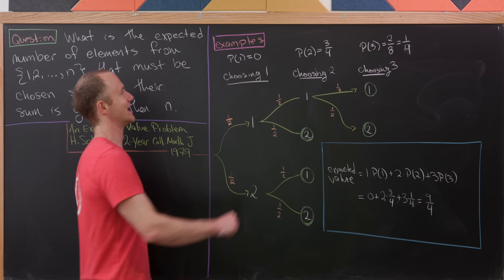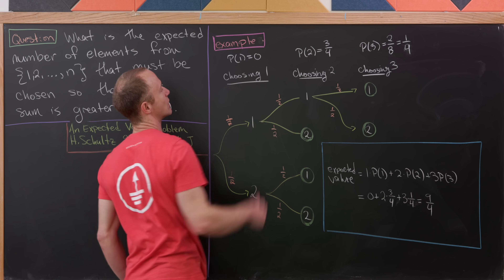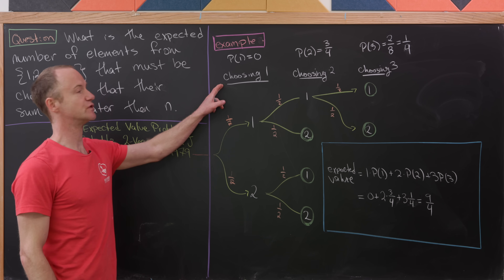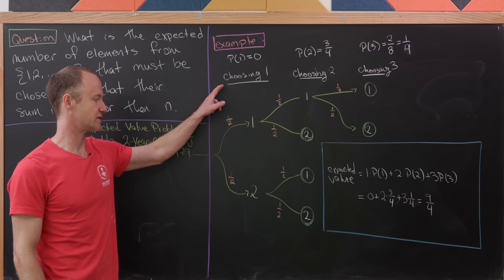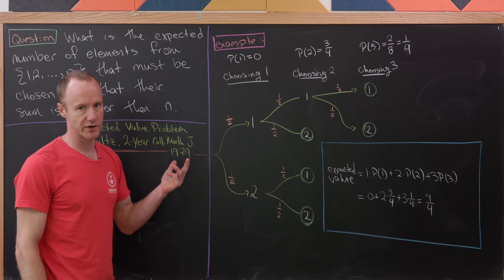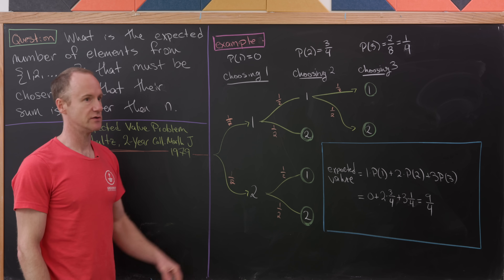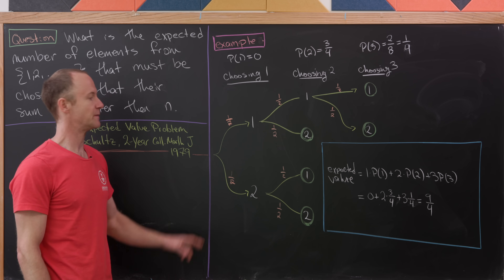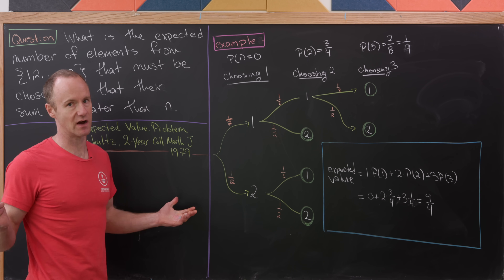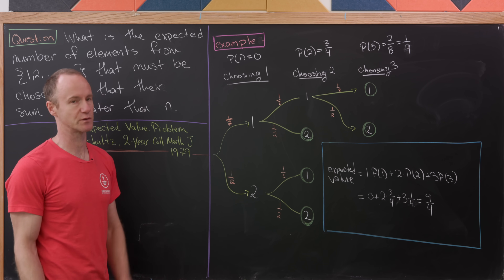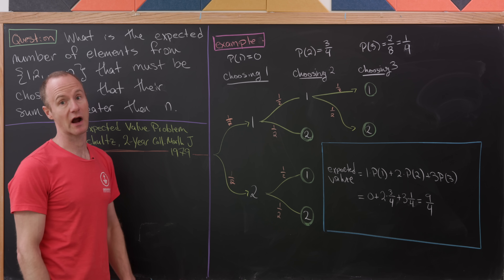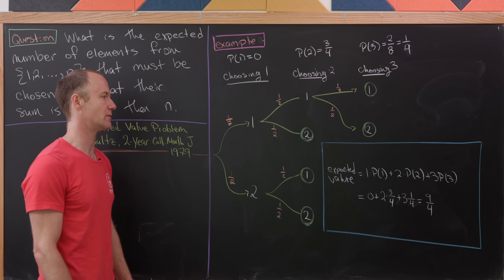Let's work through an example first. Our example will be the case when n is equal to two. Observe that if we choose one number from the set containing one and two, we can either choose one or two. But if you take the sum of one, you get one, which is less than two. You take the sum of two, you get two, which is less than or equal to two. Each of these has a probability of one-half, so you can't achieve a sum greater than two if you only use one number. Our probability here is zero.